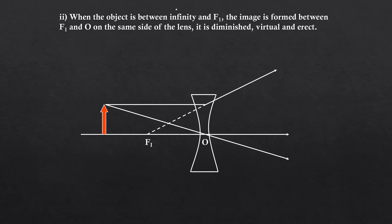Another ray of light passing through the optical center moves without refraction. The extended ray meets at focus. Point where both the rays meet is the place where the image is formed. The image is diminished, virtual and erect.